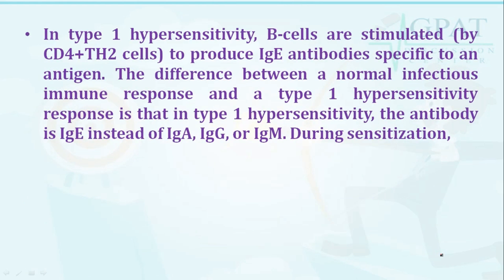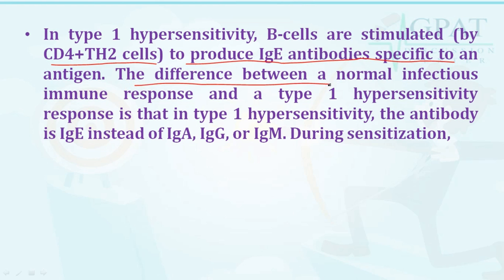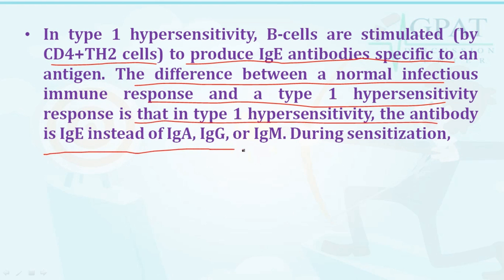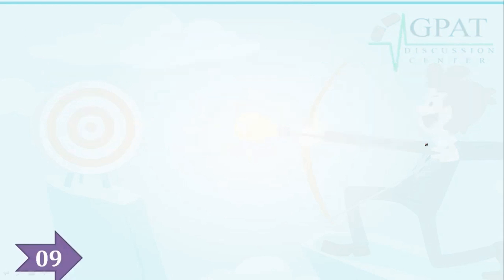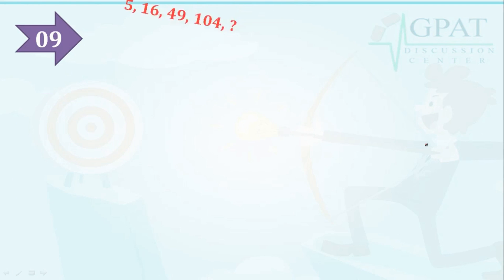In type 1 hypersensitivity, B cells are stimulated by CD4+ Th2 cells to produce IgE antibodies specific to an antigen. The difference between a normal infection immune response and a type 1 hypersensitivity response is that in type 1 hypersensitivity, the antibody produced is IgE instead of IgA, IgG, or IgM during sensitization.